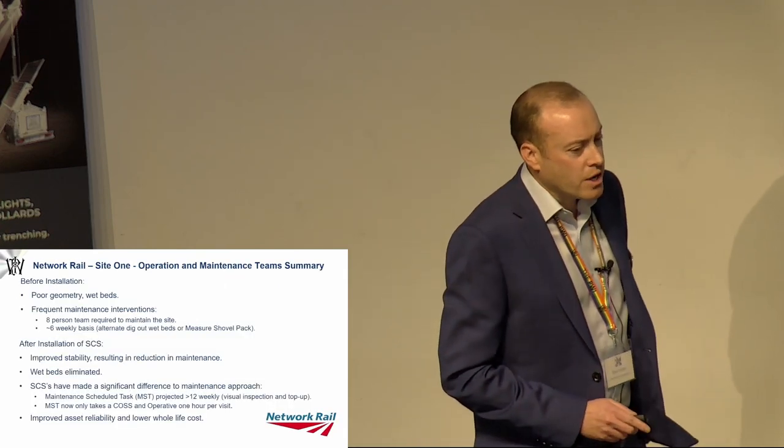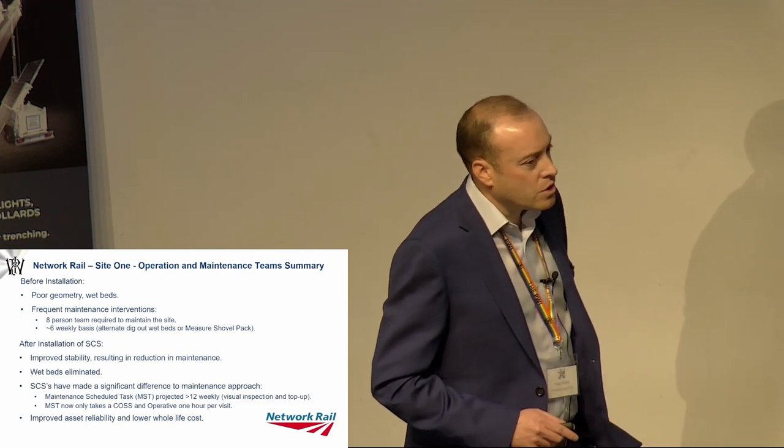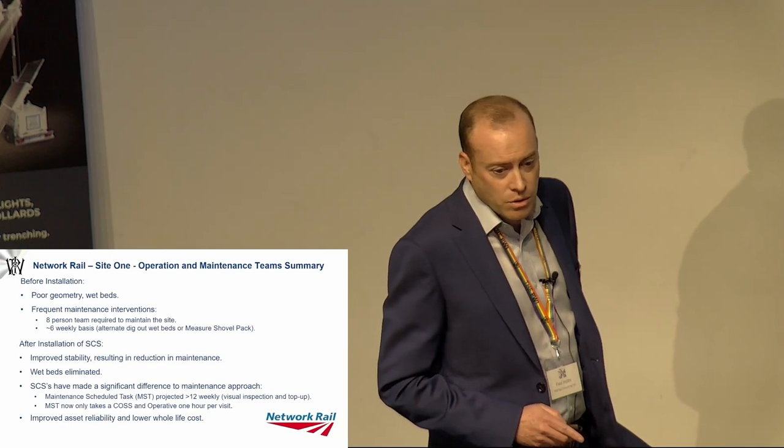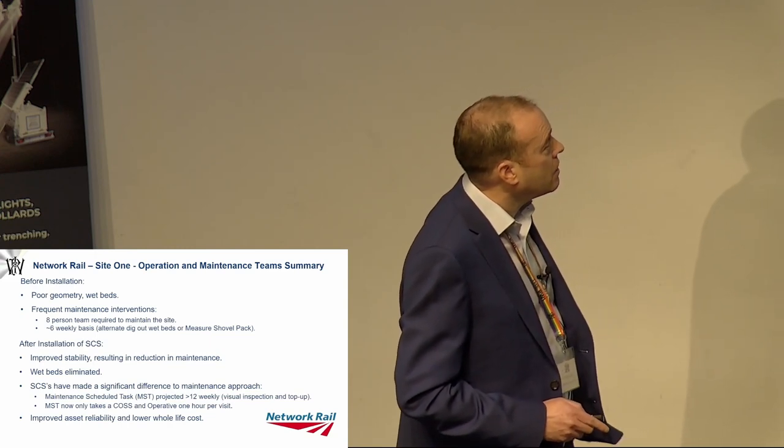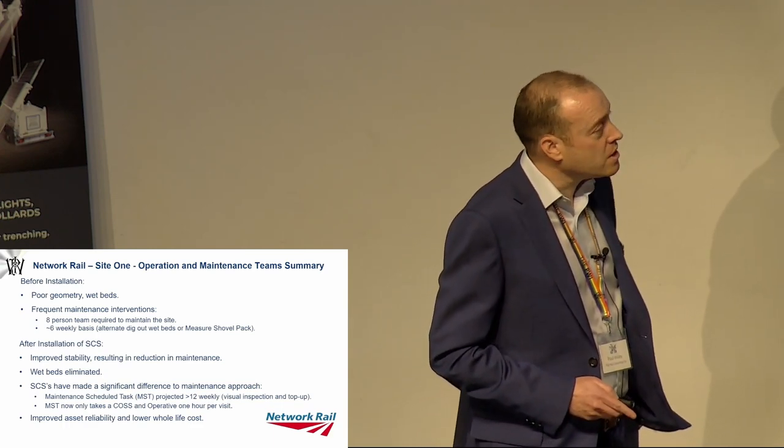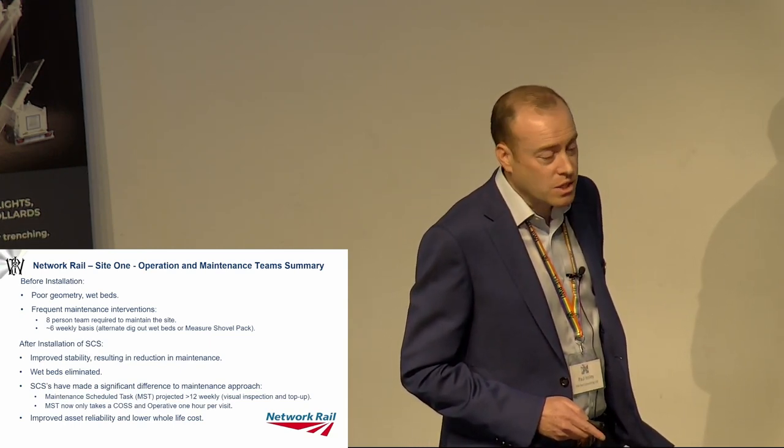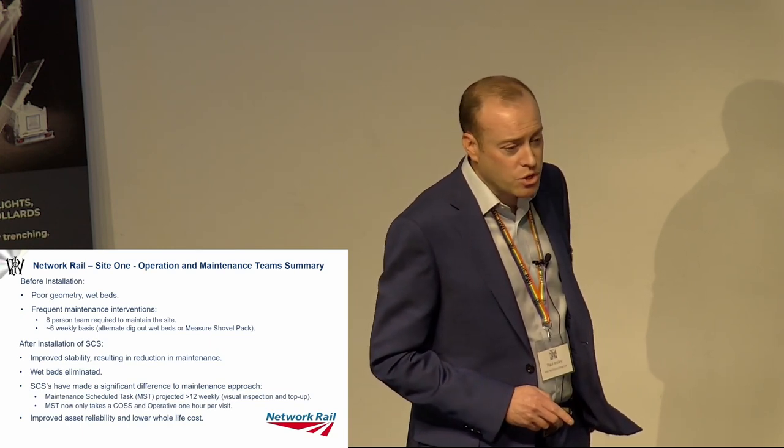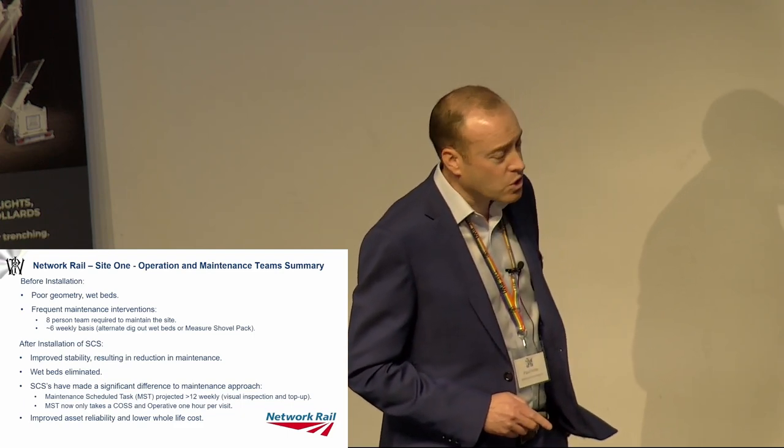I've got two slides of summary. This slide here is directly from Network Rail's operation and maintenance teams. Prior to the installation of the SCS and before the installation, there was poor geometry and there were existing wet beds. Frequent maintenance was part of the standard here, at least an eight-person team to go out and maintain the site at equal to less than six weekly basis to either alternate dig or to measure shovel pack to reinstate that site in its geometry. After installation, we improved the track stability resulting in greatly reduced maintenance. The wet bed was completely eliminated and the SCS had a significant difference on the maintenance approach.